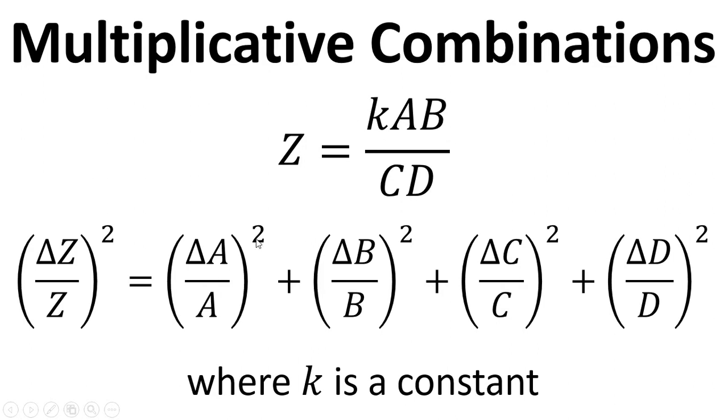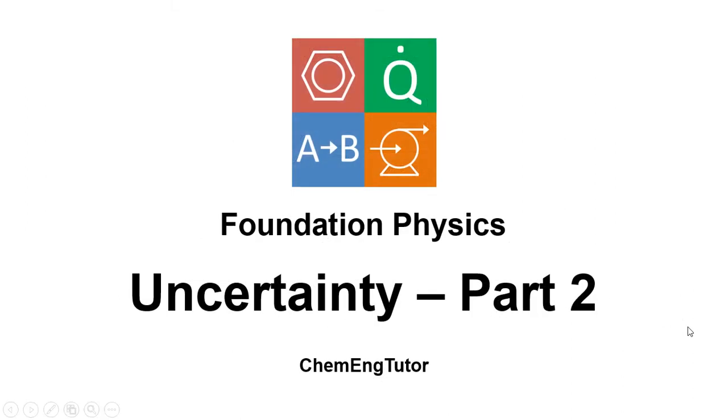And you'll notice that the K doesn't come up in this propagation of errors equation. So we don't need to take that into account here. It's taken into account by the fact that Z is calculated using this. So you include it when you calculate Z, and then Z appears in the equation here. So it all just works out for us.